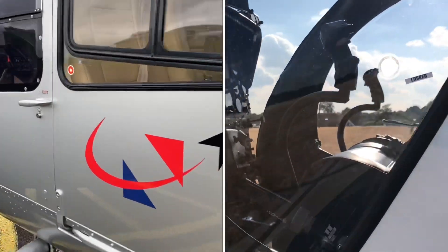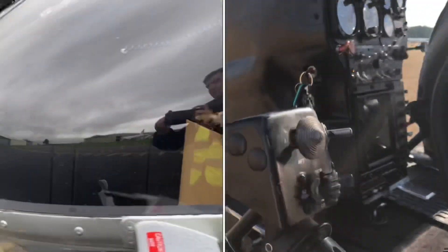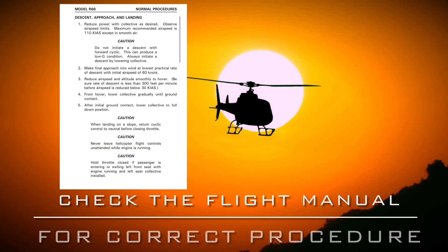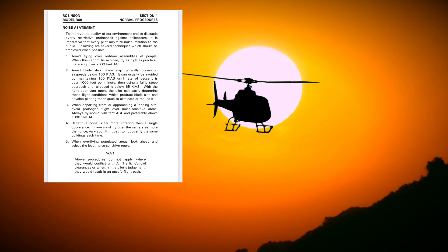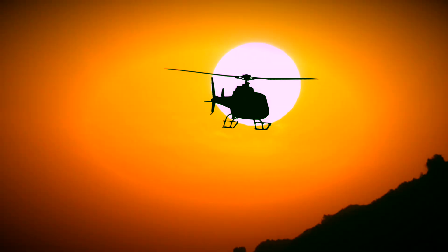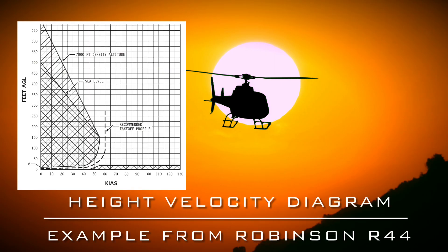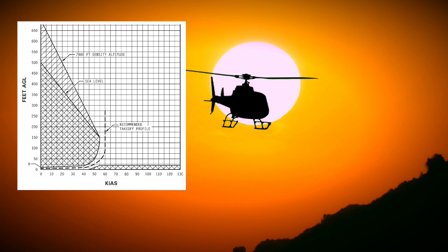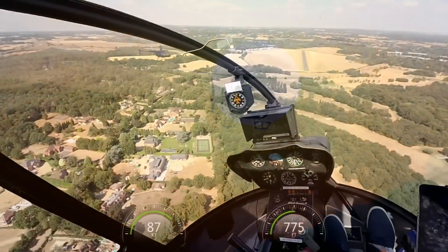The flight manual of each helicopter provides guidance on the approach profiles to fly, but it is important to point out that the height velocity diagram — the dead man's curve — which is used to illustrate where a safe autorotation may and may not be achieved, does not apply to the initial stages of approach and landing.